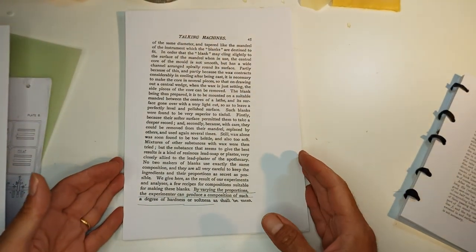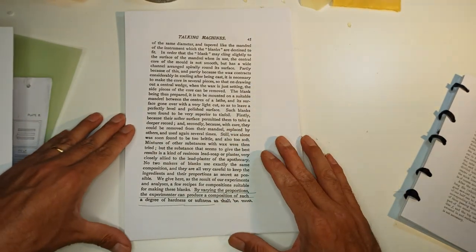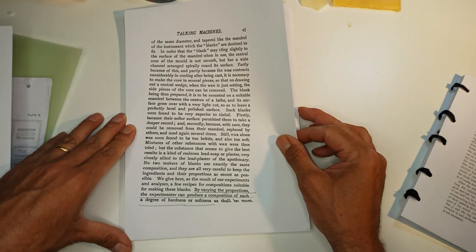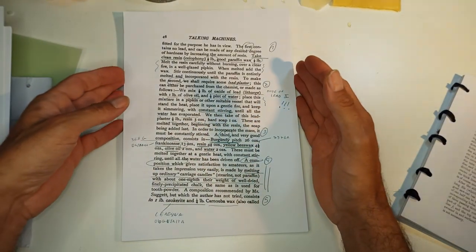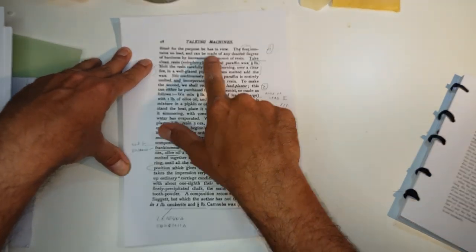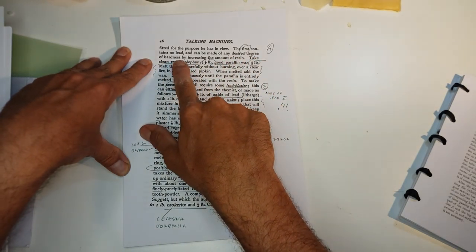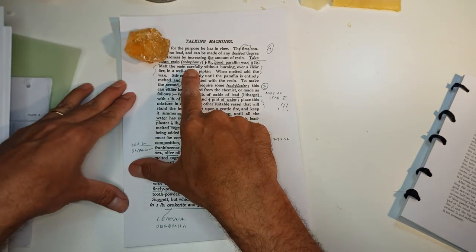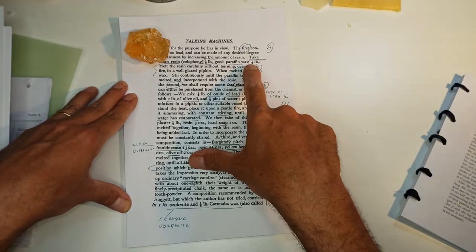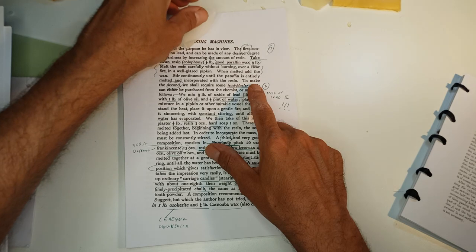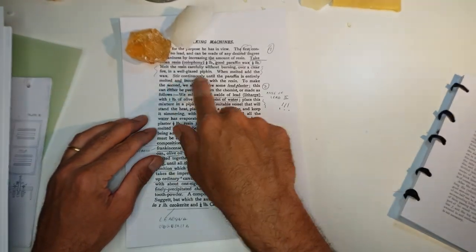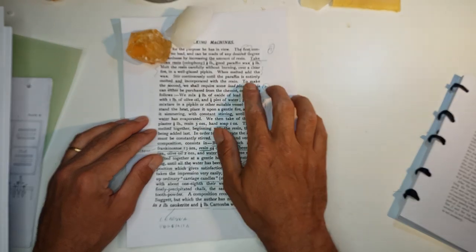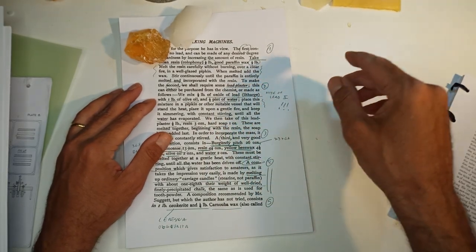On page 45-47 he starts giving recipes for wax cylinders. He says 'By varying the proportions, the experimenter can produce a composition of such a degree of hardness or softness as shall be most fitted for the purpose he has in view. The first contains no lead and can be made of any desired degree of hardness by increasing the amount of resin. Take clean resin colophony, here we have it, half pound, and good paraffin wax also half pound, so half and half. Melt the resin carefully without burning over a clear fire. When melted, add the wax, stirring continuously until the paraffin is literally melted and incorporated with resin.'